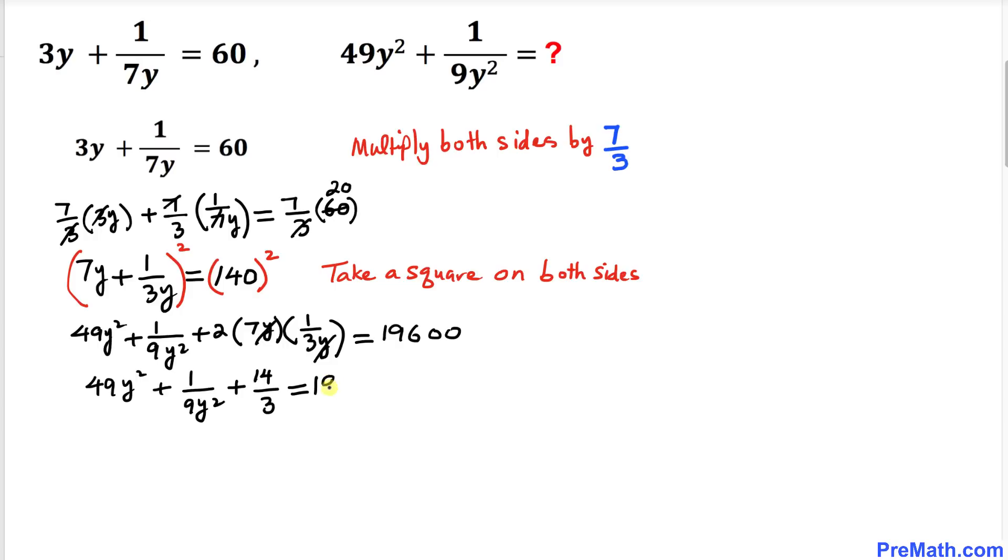Now let's move 14/3 to the right side, so we have 49y² plus 1/9y² equals 19,600 minus 14/3.